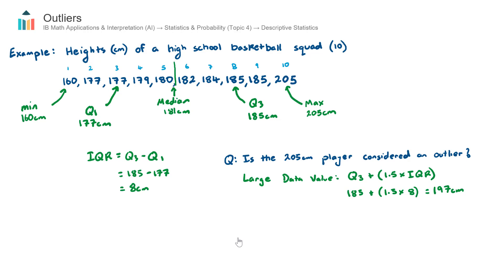So the test for a small data value, it's very similar, is equal to the lower quartile this time subtract 1.5 multiplied by the interquartile range. So that's how to test whether a lower end data value is considered an outlier on the lower end.